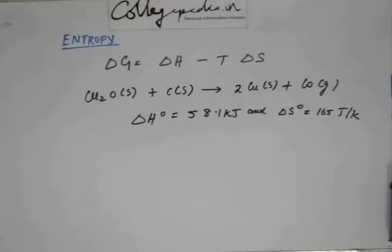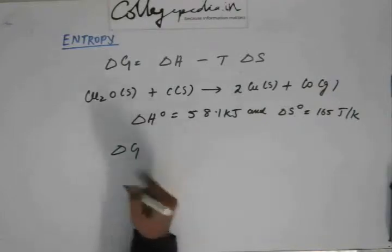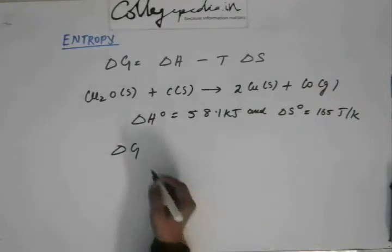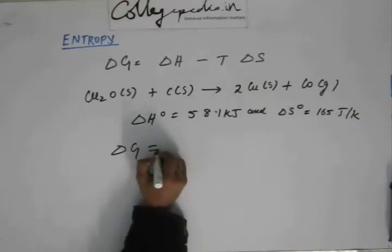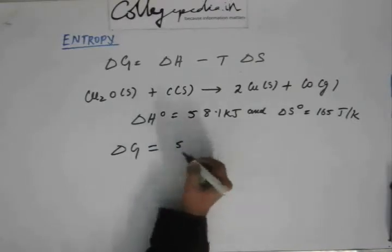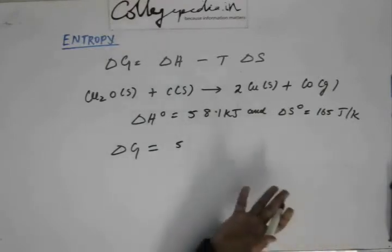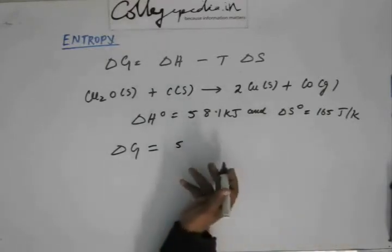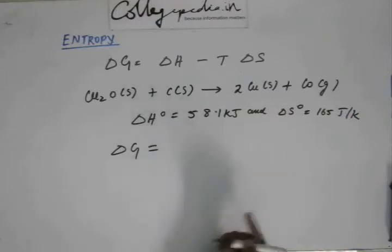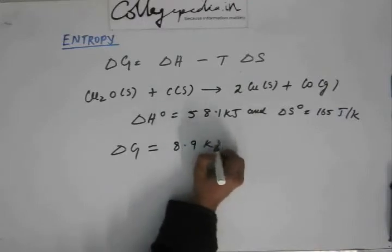and delta S0 as 165 joule per Kelvin. Now you find out delta G for this expression. Delta G calculation of delta G is very easy. If I have not mentioned temperature, you will take that temperature as 298 Kelvin. Now you find delta G, and delta G will come out as delta H minus T delta S. Delta H is given, and delta S is also given, and T is also given. Just calculate delta G. And delta G, if you calculate, you will get as 9.1 kilojoule.